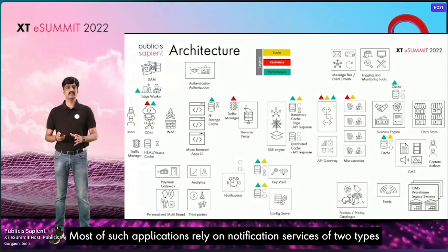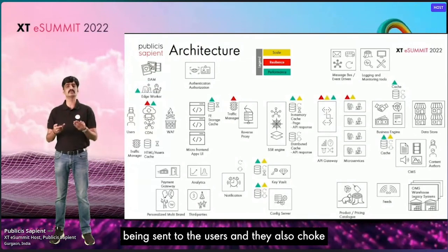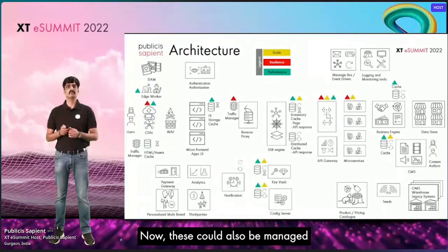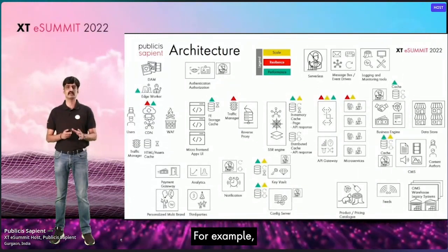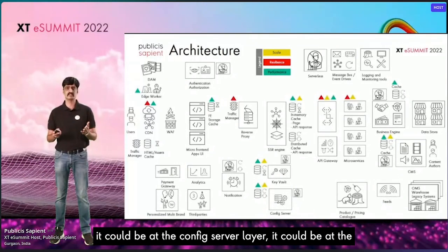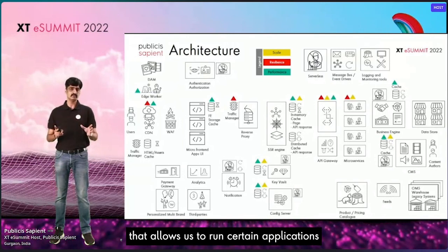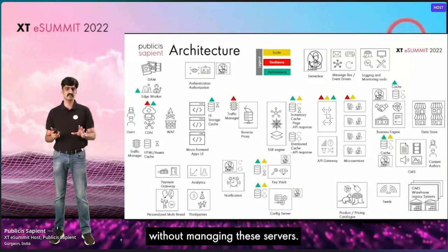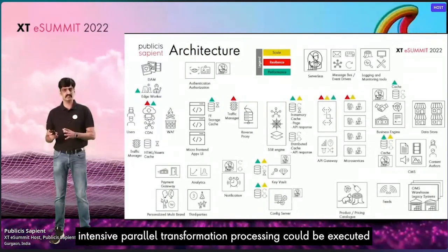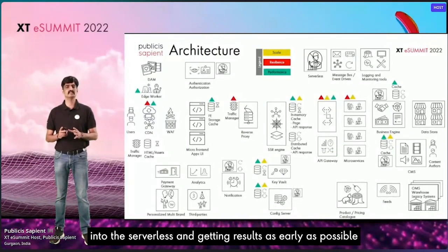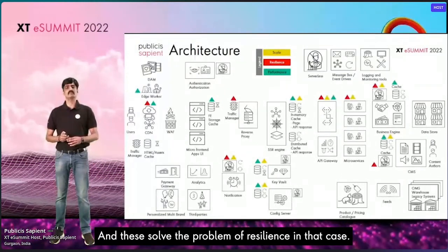Most such applications rely on notification services of two types: one to handle monitoring, and the other to send notifications to users — both of which can choke servers and traffic in many scenarios. These can also be managed through a serverless approach. Serverless can be used at multiple layers — the business engine layer, CMS level, config server level, and key vault layer. Serverless is a cloud-native development model that allows running applications without managing servers. Any job requiring intensive parallel transformation processing can be executed serverlessly to get results as quickly as possible, even for infrequent or sporadic demands. This solves the problem of resilience in those cases.